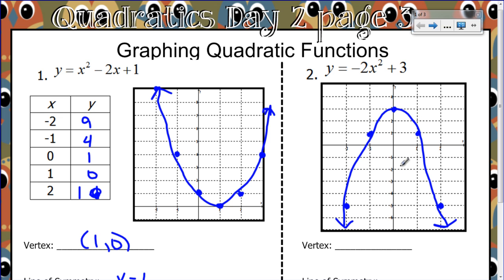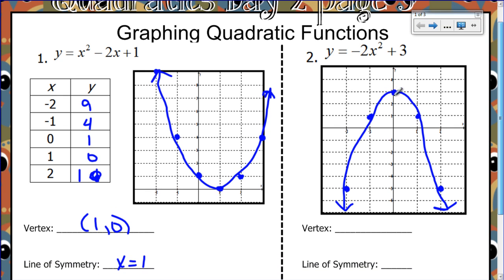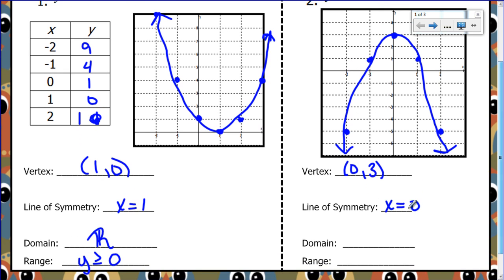Here is the parabola I have drawn. Here's your vertex at 0, 3. My line of symmetry is at x equals 0. My domain, arrows on either end, is all real numbers. This is concave down, so my range is y is less than or equal to 3.